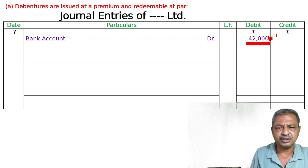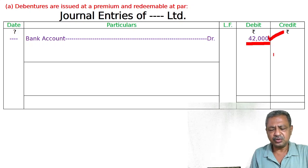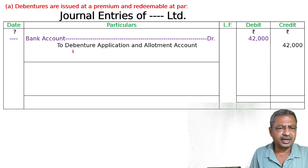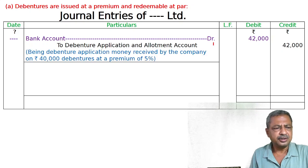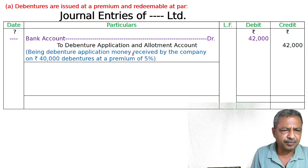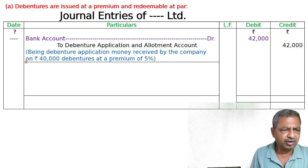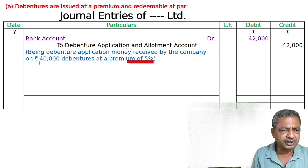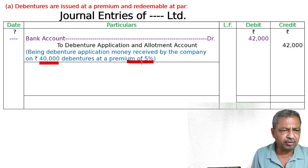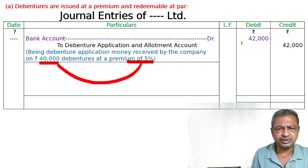42,000. To Debenture Application and Allotment Account 42,000. Being debenture application money received by the company on 40,000 debentures at a premium of 5%. 40,000 ka 5% nikalo aur add kar do, it is 42,000.